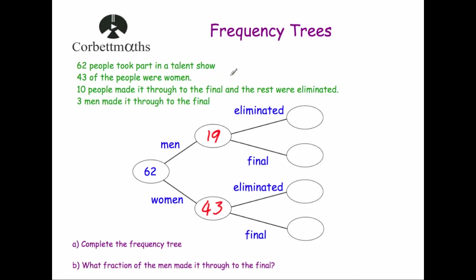Next: 10 people made it through to the final and the rest were eliminated. From that alone I can't fill anything in yet, because I don't know how many were men or women. But the next piece of information says 3 men made it through to the final. So out of the 19 men, 3 made it through, meaning 16 were eliminated. For the women: 10 made the final overall, 3 were men, so 7 women made the final. And 43 minus 7 gives us 36 women eliminated.